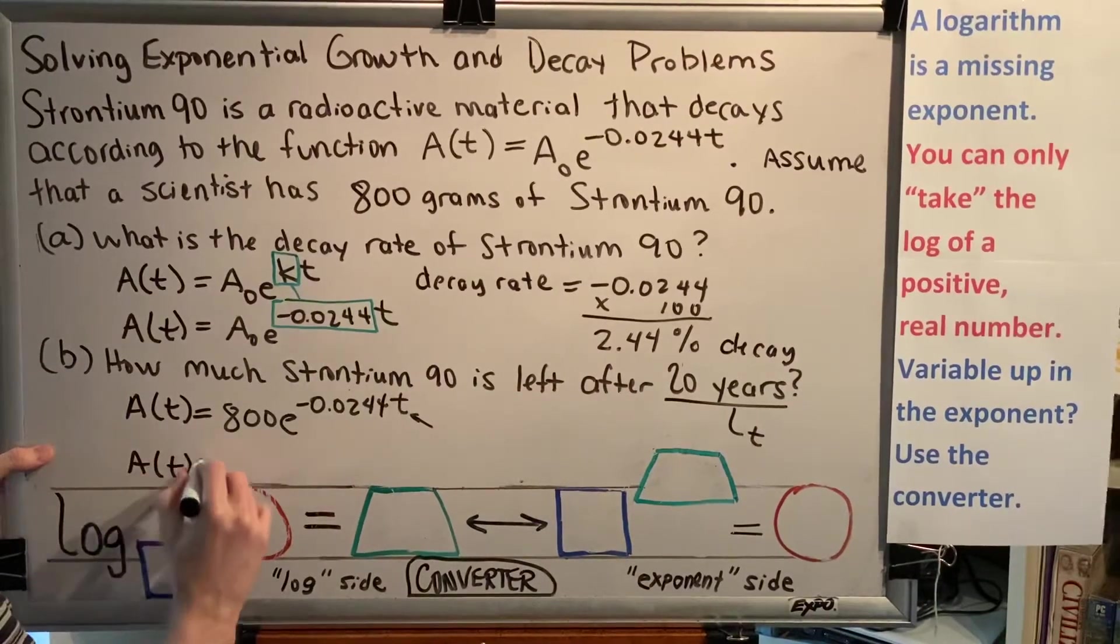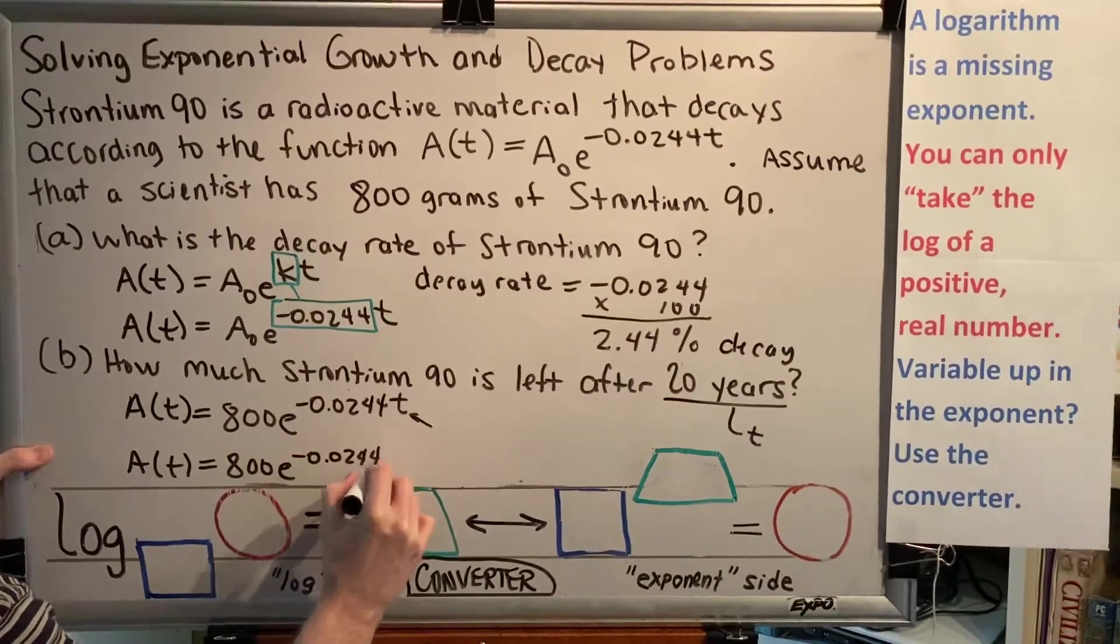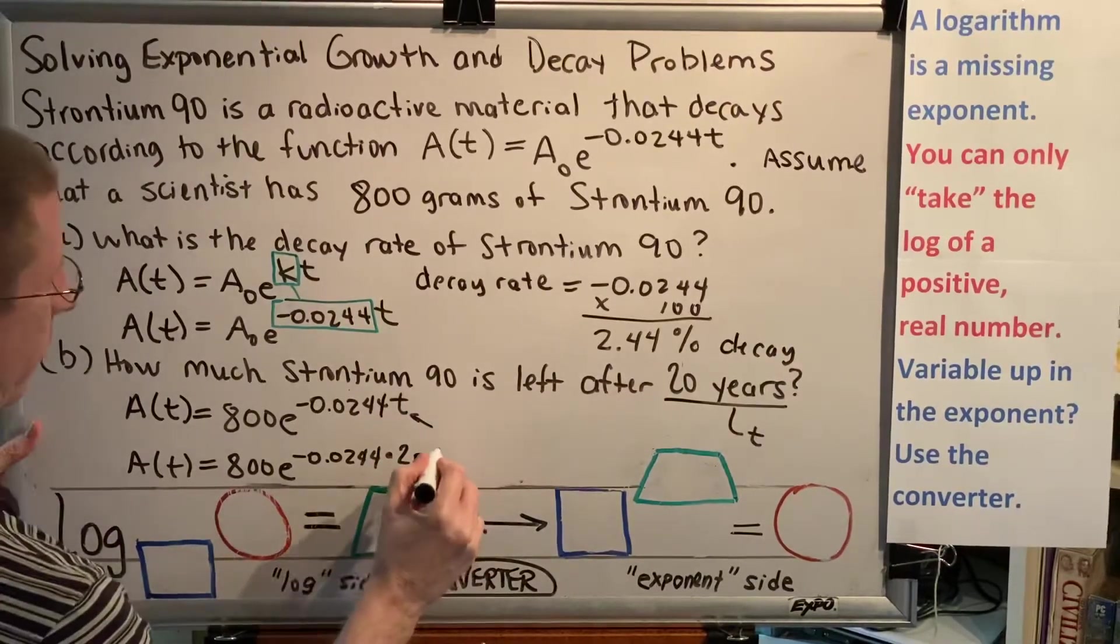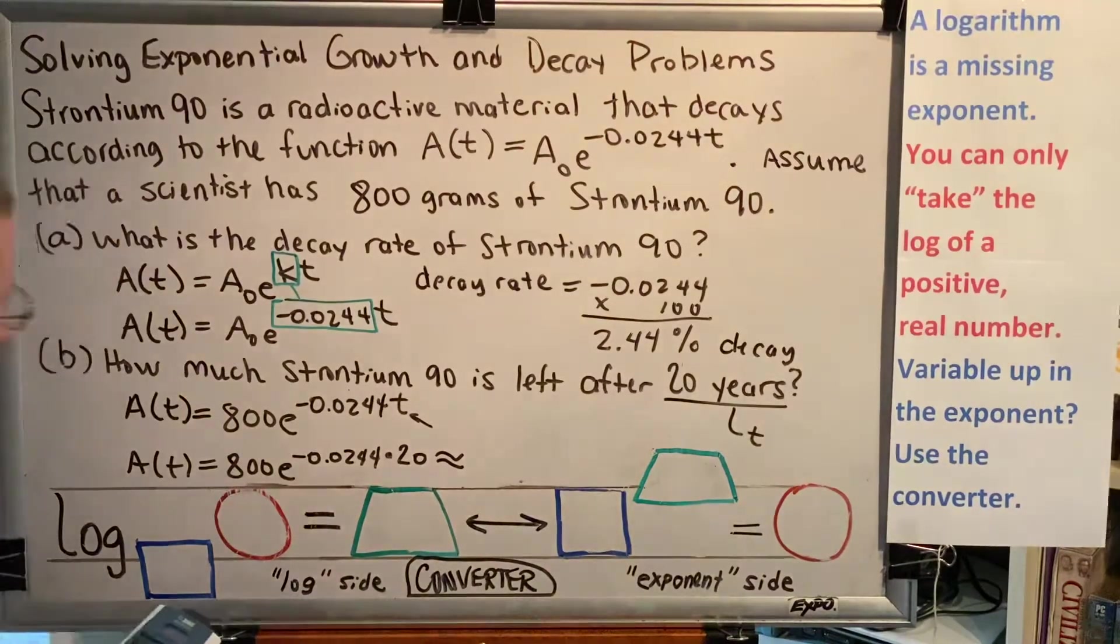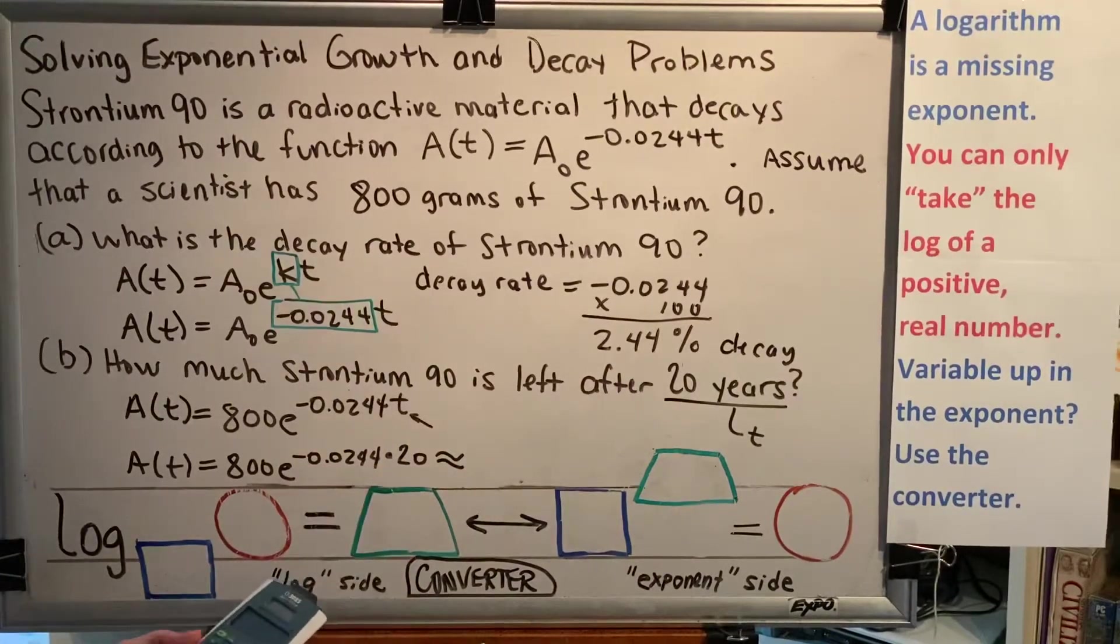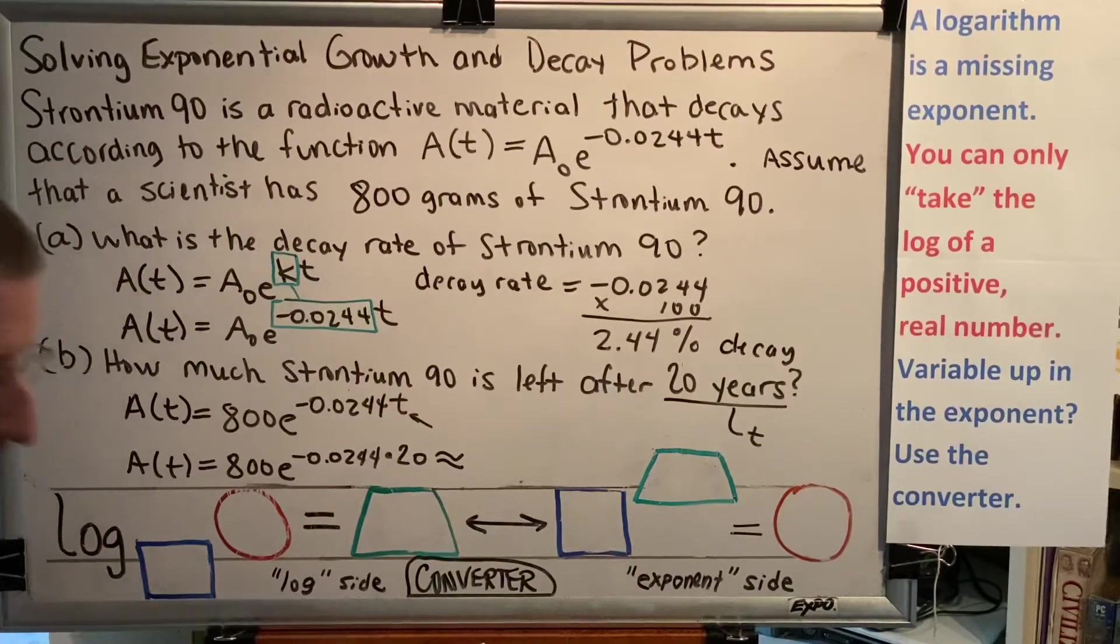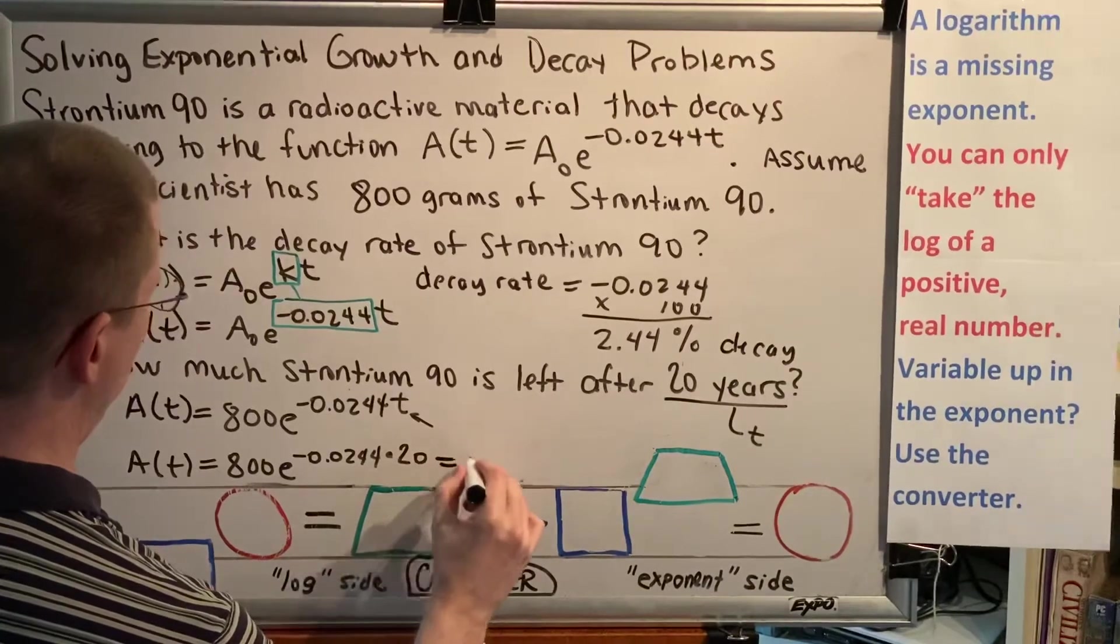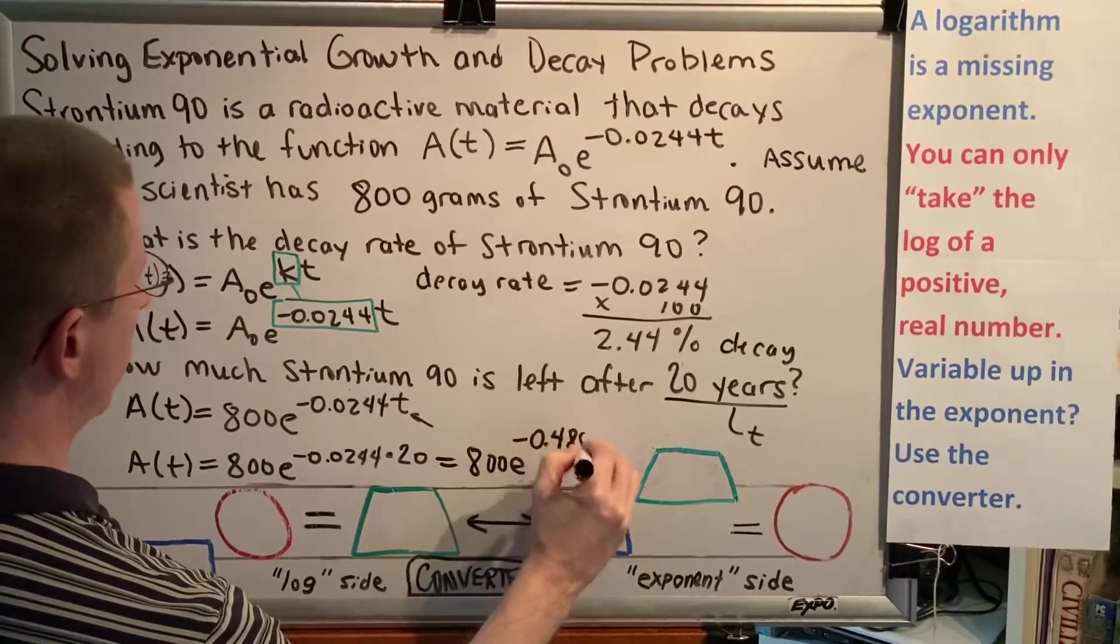So we get A(t) = 800e^(-0.0244 × 20). And if we put this in our calculators, we're going to get an answer. So calculator time, here we go. Following order of operations, the first thing that we need to do is to multiply the negative 0.0244 times the 20. So let's do that. Negative 0.0244 times 20. That gives us negative 0.488. So this is going to equal 800e^(-0.488).